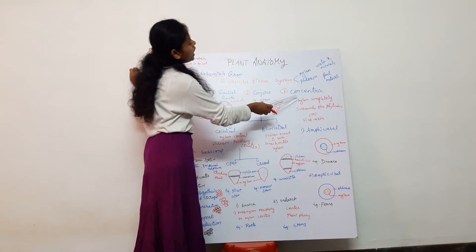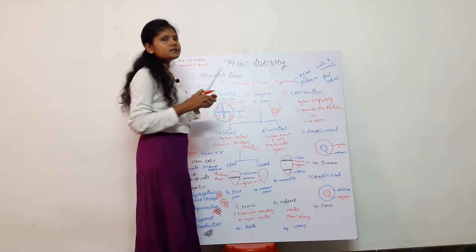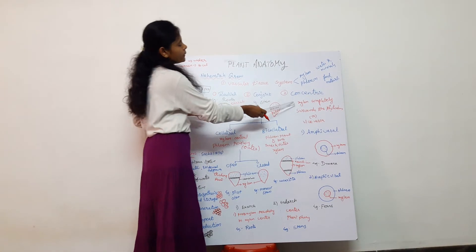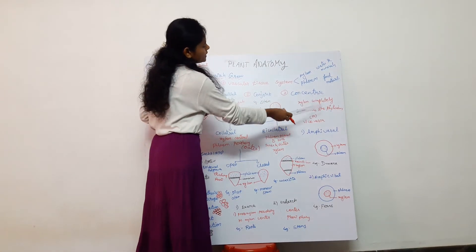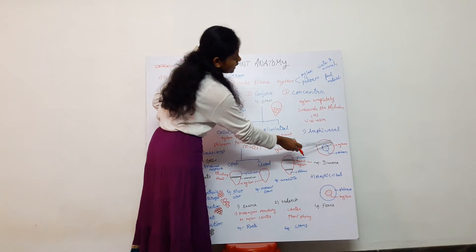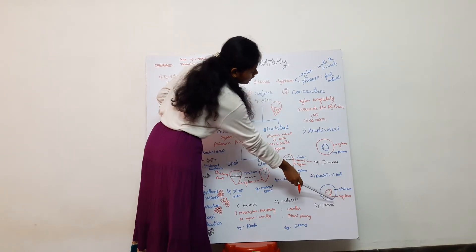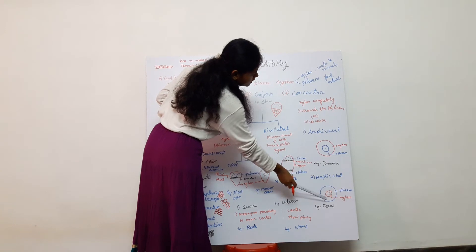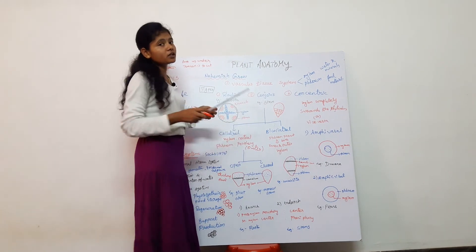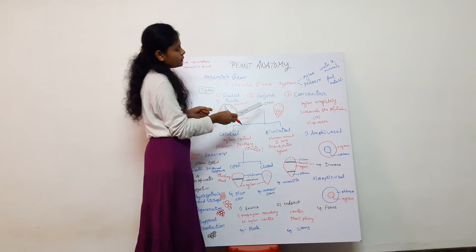The third type is the concentric vascular bundle. In concentric bundles, xylem completely surrounds the phloem, or phloem completely surrounds the xylem. There are two types of concentric bundles.